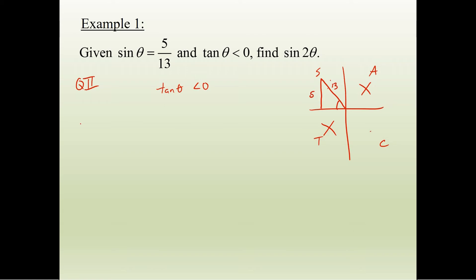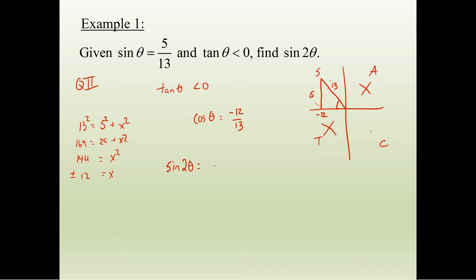Sine of theta is opposite over hypotenuse, so cosine requires the Pythagorean theorem: 13 squared equals 5 squared plus x squared, giving 169 equals 25 plus x squared, so x squared equals 144, and x equals plus or minus 12. Since we're in quadrant 2 going to the left, the adjacent side is negative 12. Therefore cosine theta equals adjacent over hypotenuse, which is negative 12 over 13.